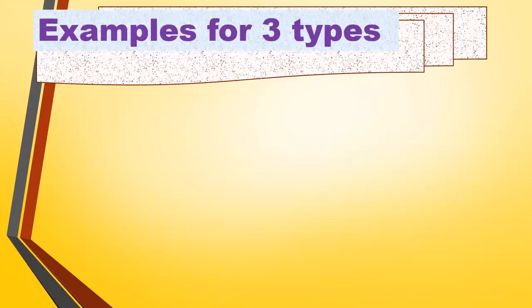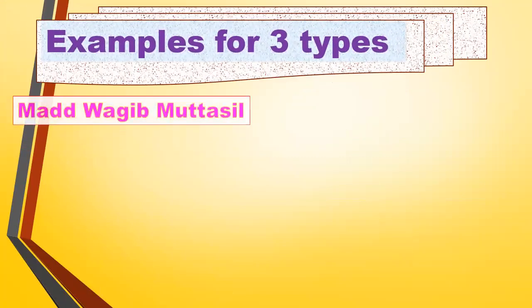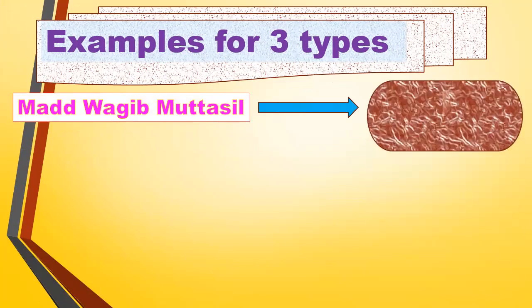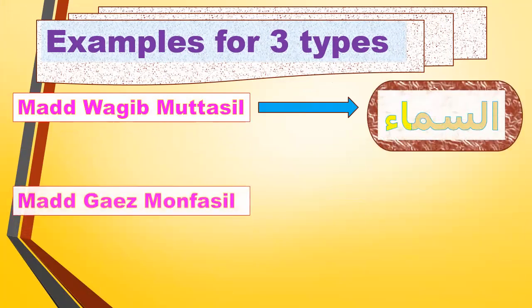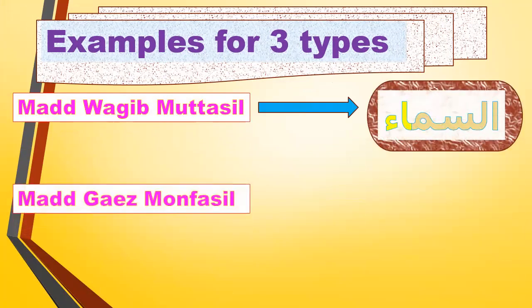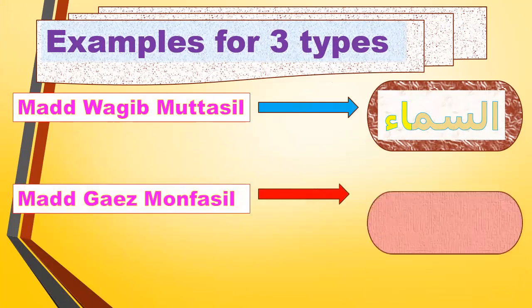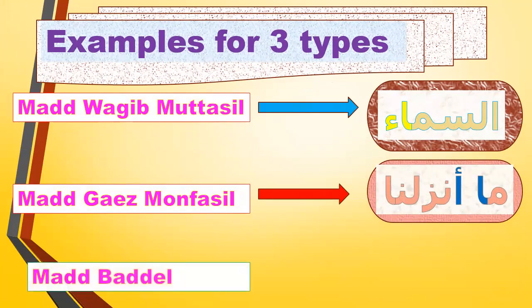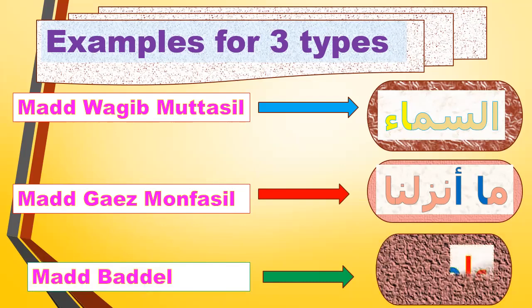Examples for the three types: Madd Wajib Muttasil, like As-sama. Madd Ja'iz Munfasil, like Ma Anzalna. Madd al-Badal, like Amana.